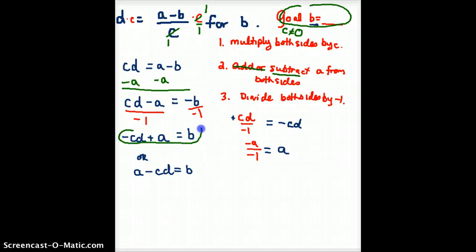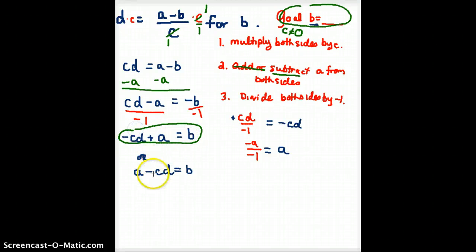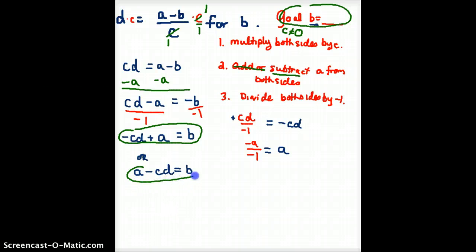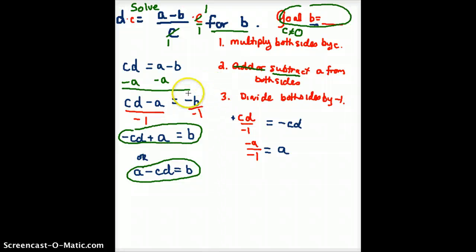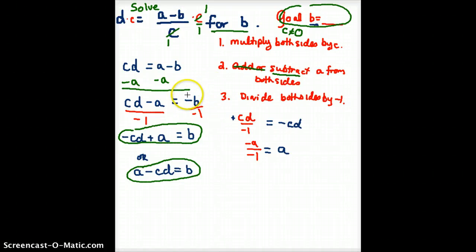So remember, when we solve this type of problem, our goal is to get the variable that is designated here. So we're supposed to solve this for B, right? So our directions here say solve, and then it gives you the problem in blue for B. So our goal is to get B equals. If we get minus B equals, we're not done. We have to continue on until we get all the way to B.